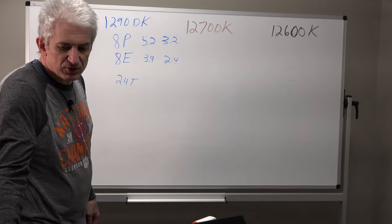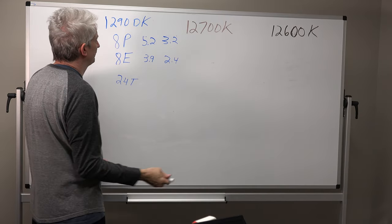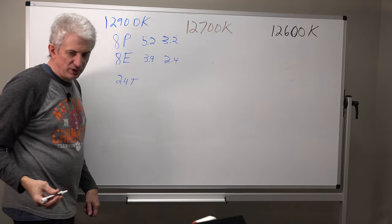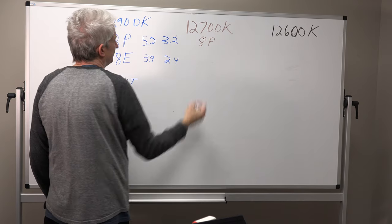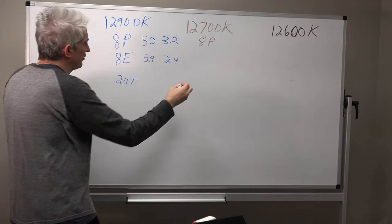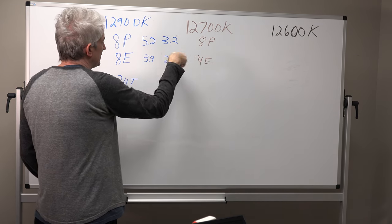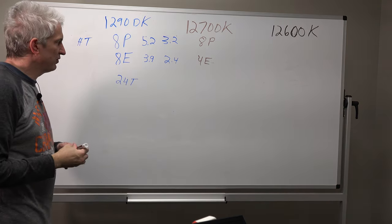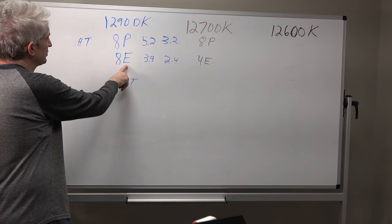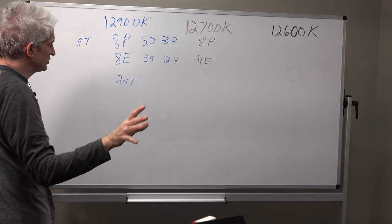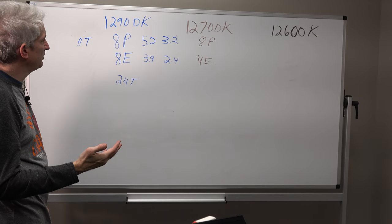Now let's look at the 12700K. This is the i7. This particular chip has eight P cores still, but it only has four E cores. And I'm not going to get into what the turbo speeds and all that are because I don't have those memorized. But as you see, there's a very small difference here. The only main difference here is at least in core count, we have four less efficiency cores.